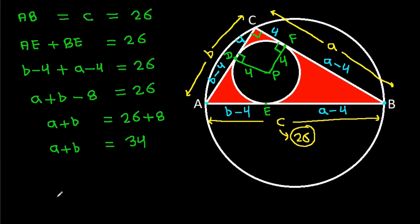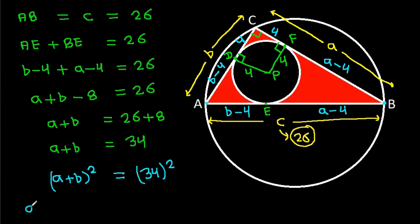Now, (a plus b) squared equals 34 squared. Expanding: a squared plus b squared plus 2ab equals 34 squared, which is 1156.